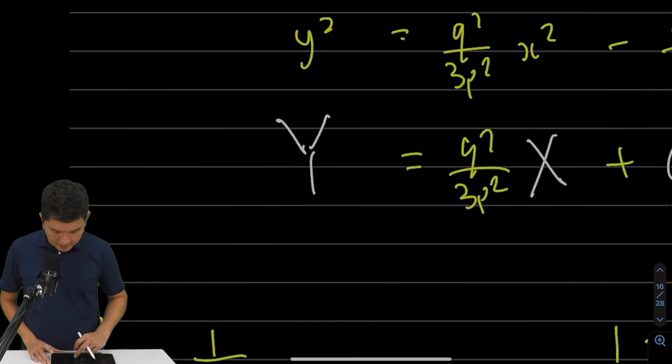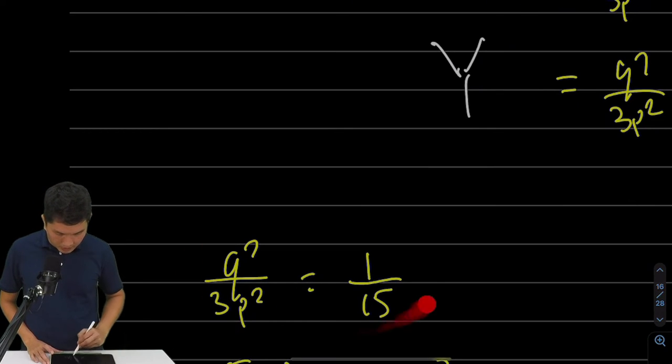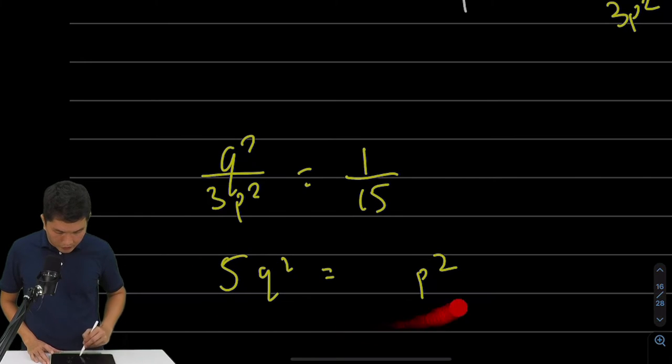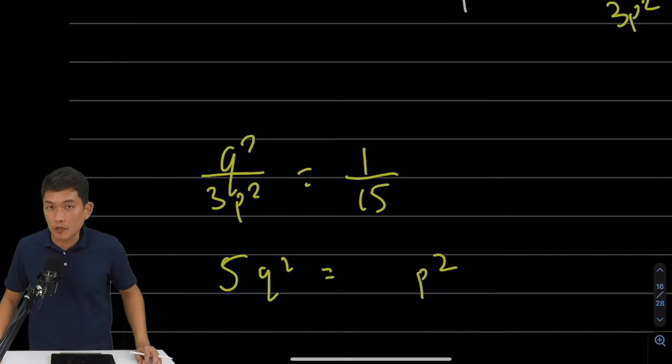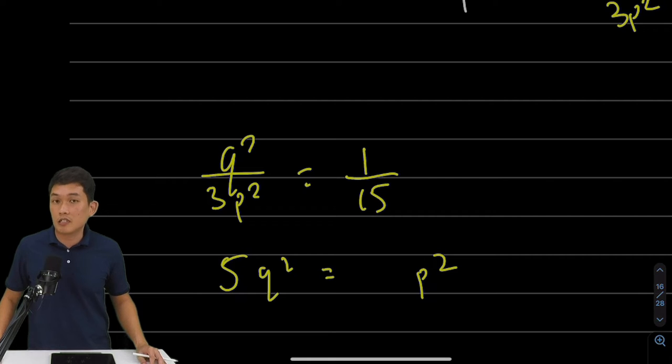So let me first do this one. Let this be 1 over 15. So if you do that over here, you end up with 5q-square equals to p-square. And I'm going to stop that because this is an equation with two unknowns. To solve an equation with two unknowns, you need another equation.